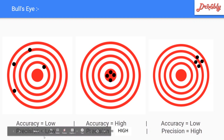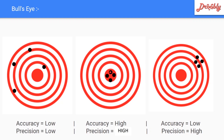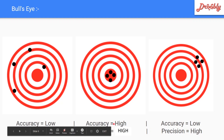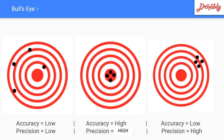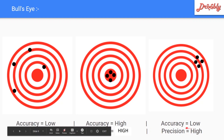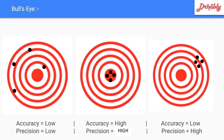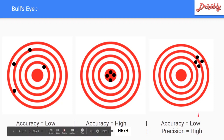Second case: if we attack the bullseye — hitting the center — that means high accuracy. When measurements cluster at the center, that is high accuracy. High precision means the shots are grouped tightly together. If they are grouped but not at center, precision is high but accuracy is low. If both precision and accuracy are high, all measurements fall on the center of the bullseye.